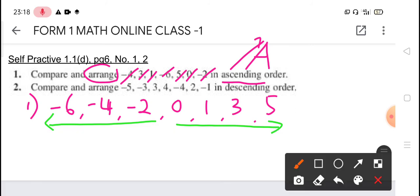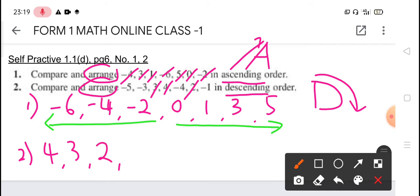So now next, we continue with question 2. This time, we need to arrange them in descending order. Descending order go down, moving down, so from the biggest to the smallest. If you want to start from biggest, we start from the positive number. So the biggest will be 4, continue with 3, continue with 2, continue with negative 1, negative 3, negative 4, and lastly, negative 5. So this is the answer for self-practice 1.1d. So students, once again, teacher remind here, please do your checking and correction using your red pen.